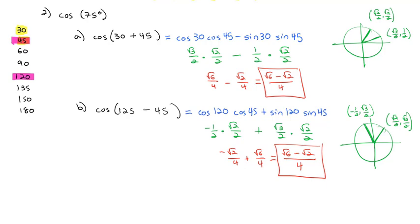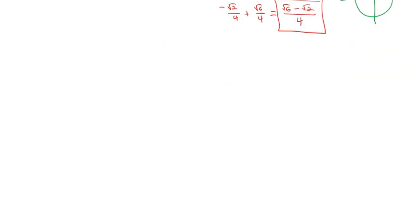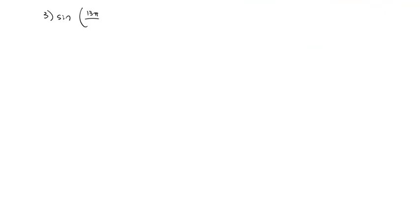All we had to do was identify the combination of known angles to give us the angle we wanted. We did this one in degrees, but we like to work more often with radians. So let's try an example with radians — let's find the sine of 13 pi over 12.